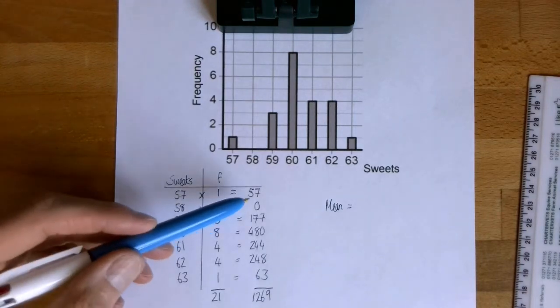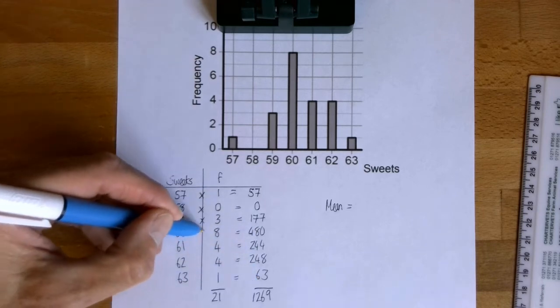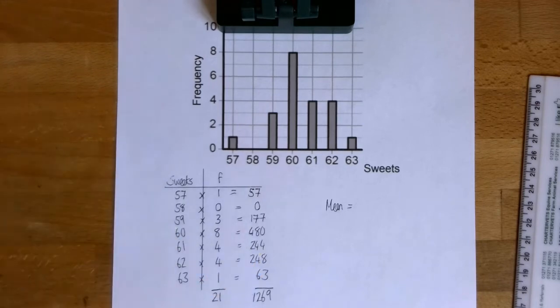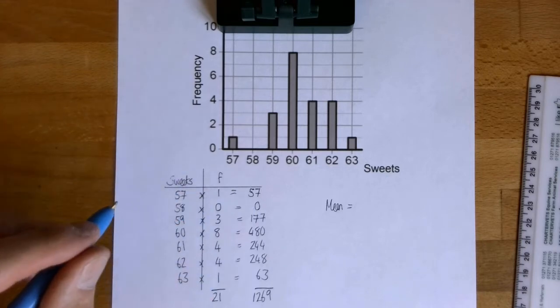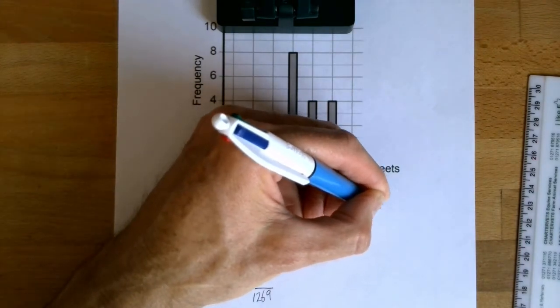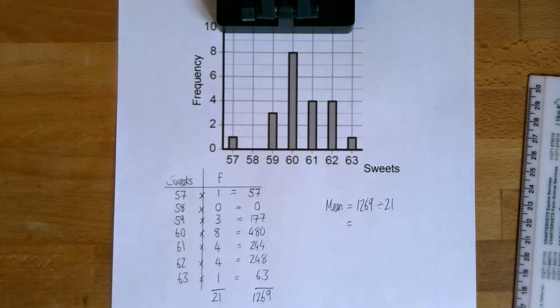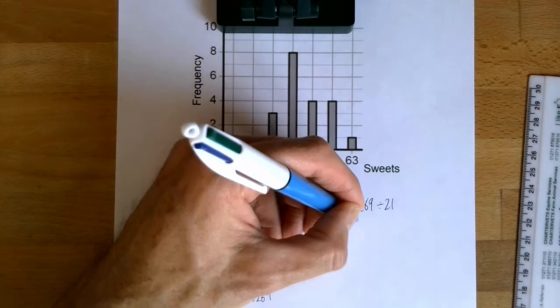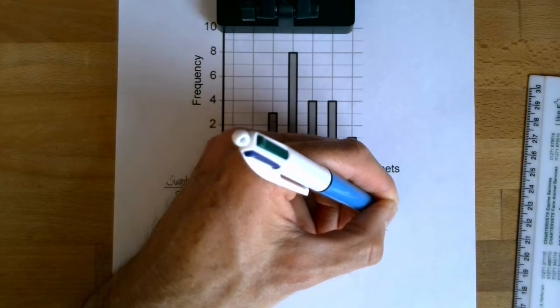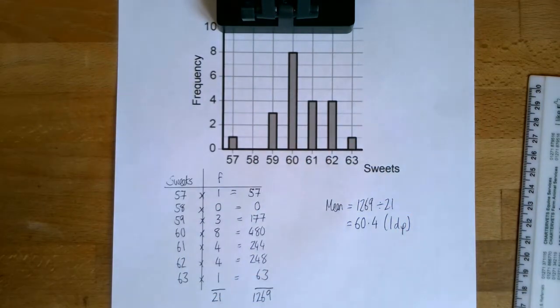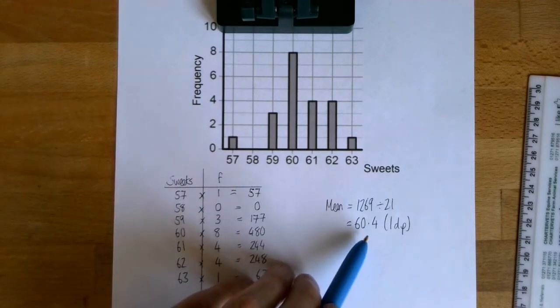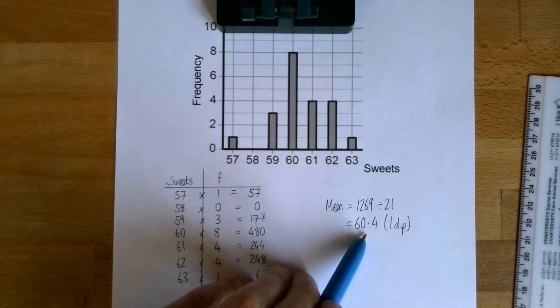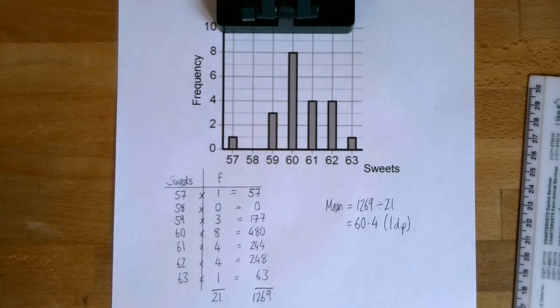We need the total of all our sweets and the total number of packets and we use those to work out the mean. I've added up my totals for my multiplication sums and got 1,269. So that's all the sweets in all the packets. And how many packets? 21 packets. So the mean is the total of all the data divided by the number of values. 1,269 divided by 21. As is often the case with the mean, you get a value with lots of decimal places, so I'm going to round it to one decimal place. Now we can ask the question, is the manufacturer being honest when it says on average 60 sweets in each packet? And you could say, well, actually, yes, the mean is slightly above 60. So it's being quite generous.